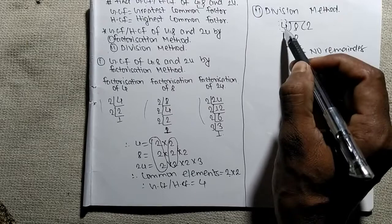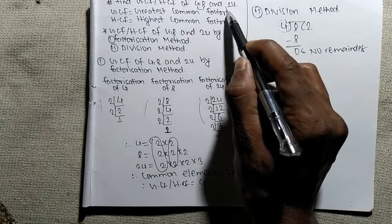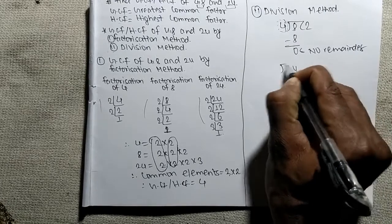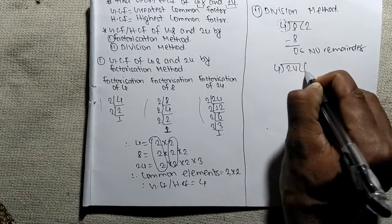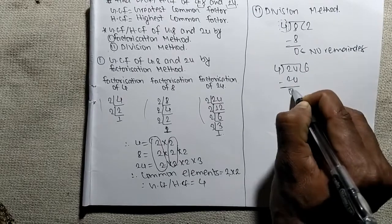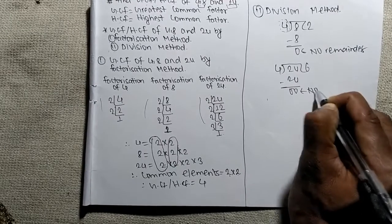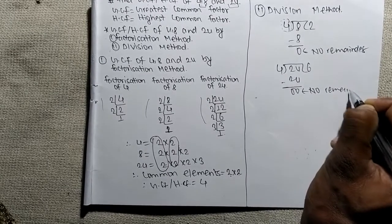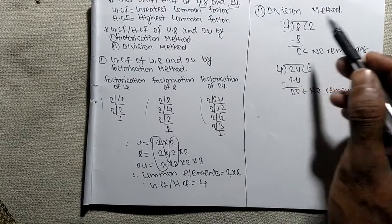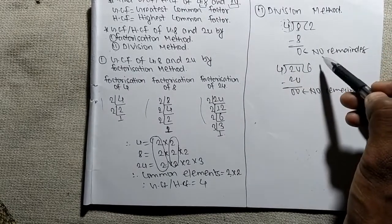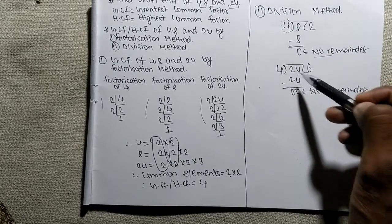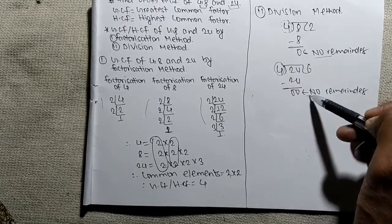Let's check whether 4 also satisfies the third element, which is 24. When 24 is divided by 4, it is 4 times 6 means 24, so again it leaves no remainder at last. In both cases — for 8 and for 24 — 4 takes no remainder.